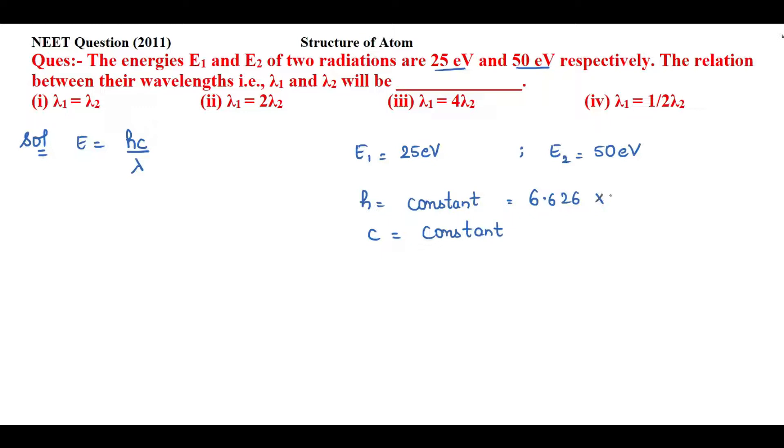The value of h is 6.626×10⁻³⁴ joule seconds and c is 3×10⁸ meters per second. Now we will see the relation according to energy 1 and energy 2.